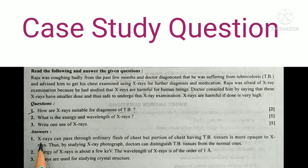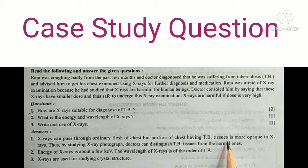Answer for this question is: X-rays can pass through ordinary flesh of chest but portion of chest having TB tissues is more opaque to x-rays. Thus while studying x-ray photograph, doctor can distinguish TB tissues from the normal ones.